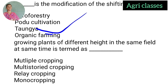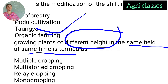Next: Growing plants of different heights in the same field at the same time is termed as — multiple cropping system, multi-storied cropping, relay cropping, or monocropping? The correct answer is multi-storied cropping. When plants of different heights grow in the same field, it is called multi-storied cropping.